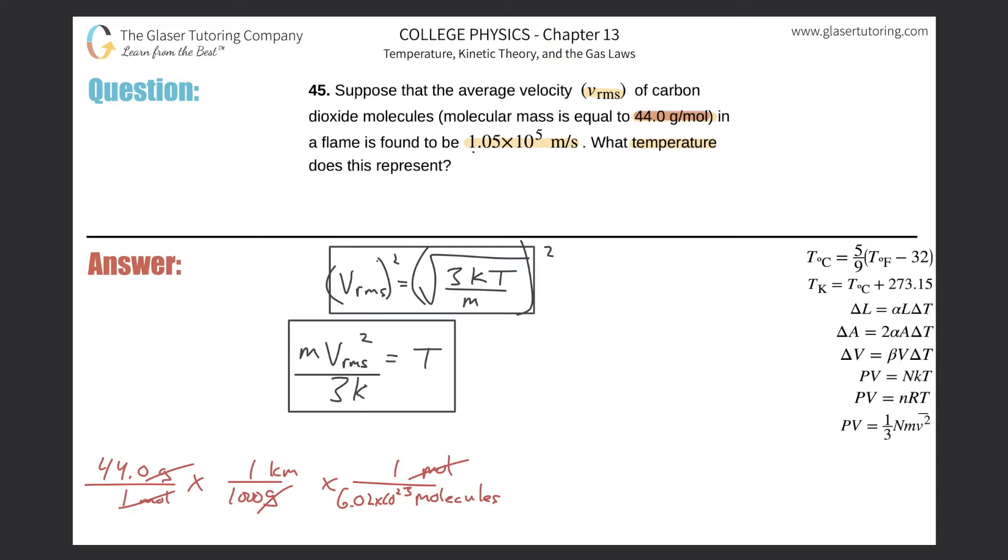We are left with kilograms per molecule, and that's what we were after. We want to know the mass in kilograms of a molecule, so take the 44, divide it by 1000, then multiply it by 6.02 times 10^23. Here we go: we have now a value of 7.31 times 10^-26 kilograms per molecule.